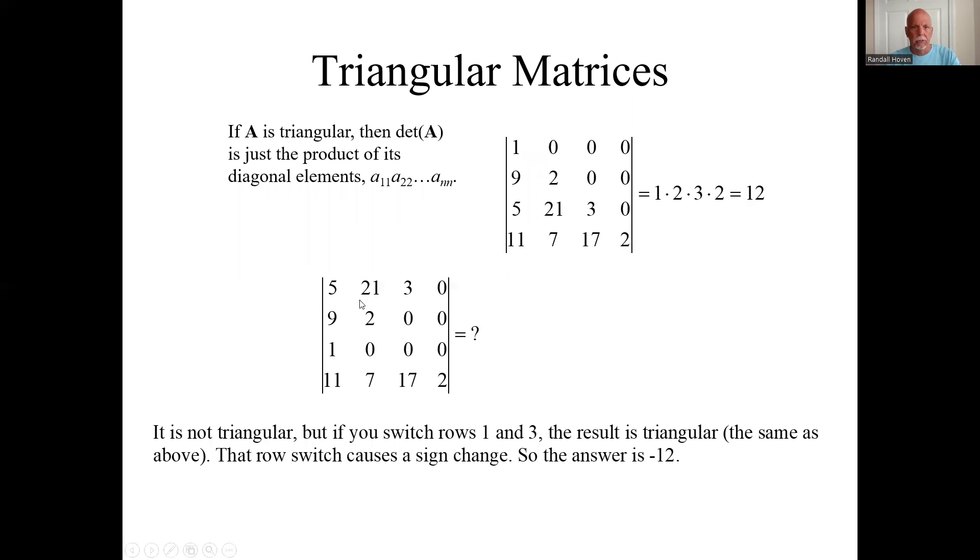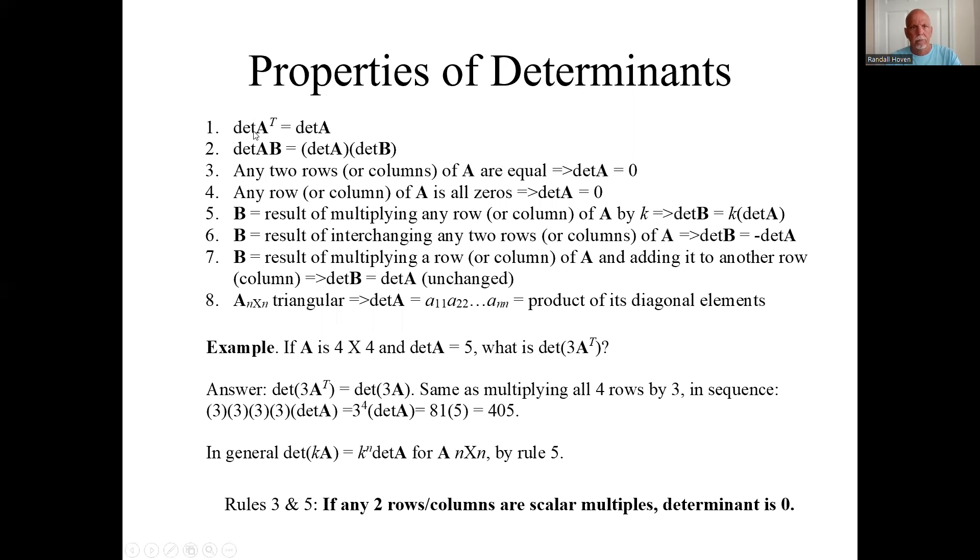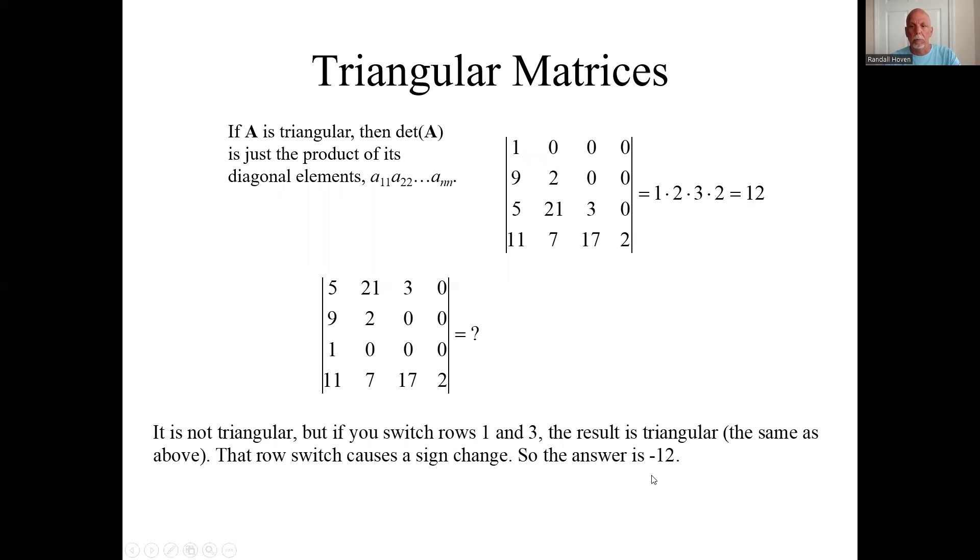It will become this matrix. So the diagonal elements after switching rows one and three will be one, two, three, two. I switch rows. If they interchange rows, I need to switch the sign. So the answer would be minus 12 instead of just 12.